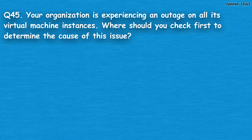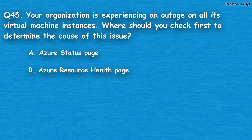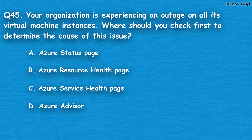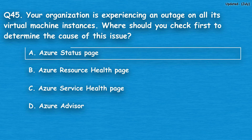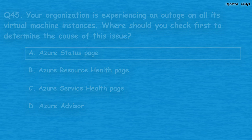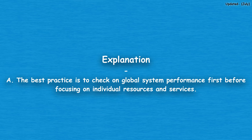Question number 45: Your organization is experiencing an outage on all its virtual machine instances. Where should you check first to determine the cause of this issue? Option A: Azure status page, option B: Azure resource health page, option C: Azure service health page, option D: Azure Advisor. The correct answer is option A, Azure status page. The best practice is to check global system performance first before focusing on individual resources and services.